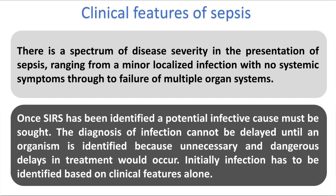Sepsis affects the body by various mechanisms, like increase in vascular permeability, myocardial dysfunction due to release of mediators — sepsis depresses the myocardium — DIC (disseminated intravascular coagulation), and impaired oxygen delivery to tissues. There is a spectrum of clinical features ranging from minor localized infection with no systemic symptoms through failure of multiple organ systems.